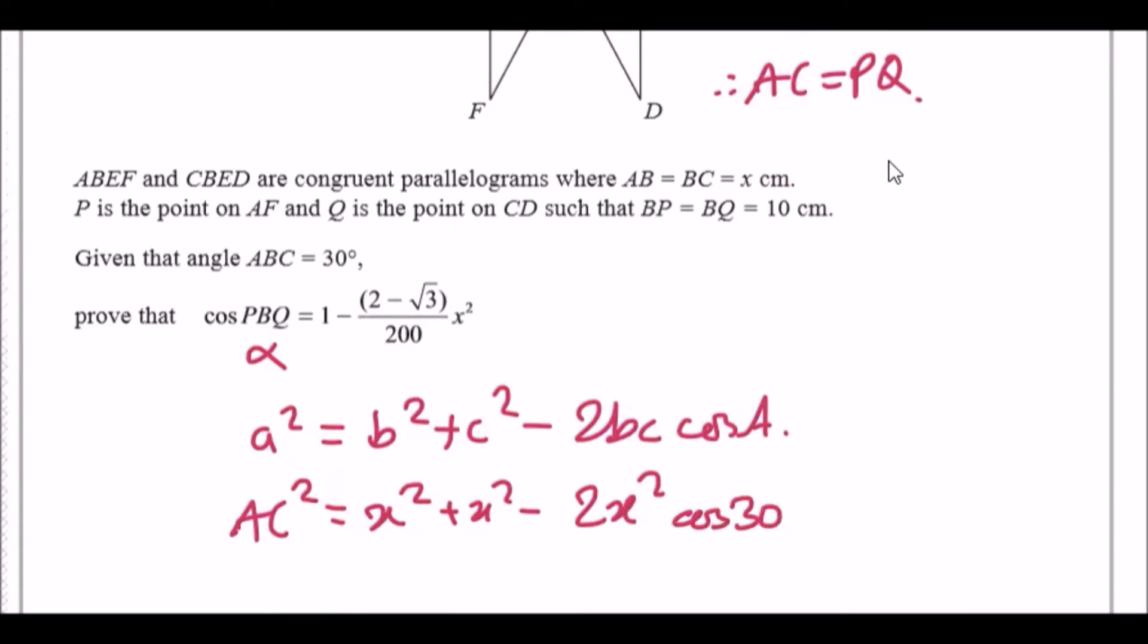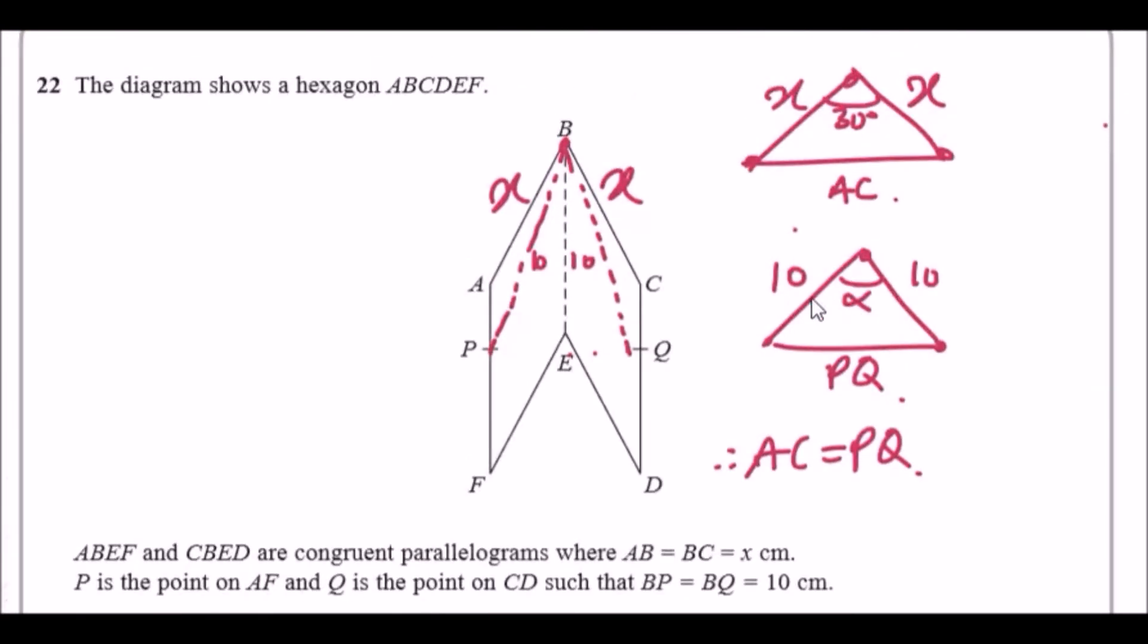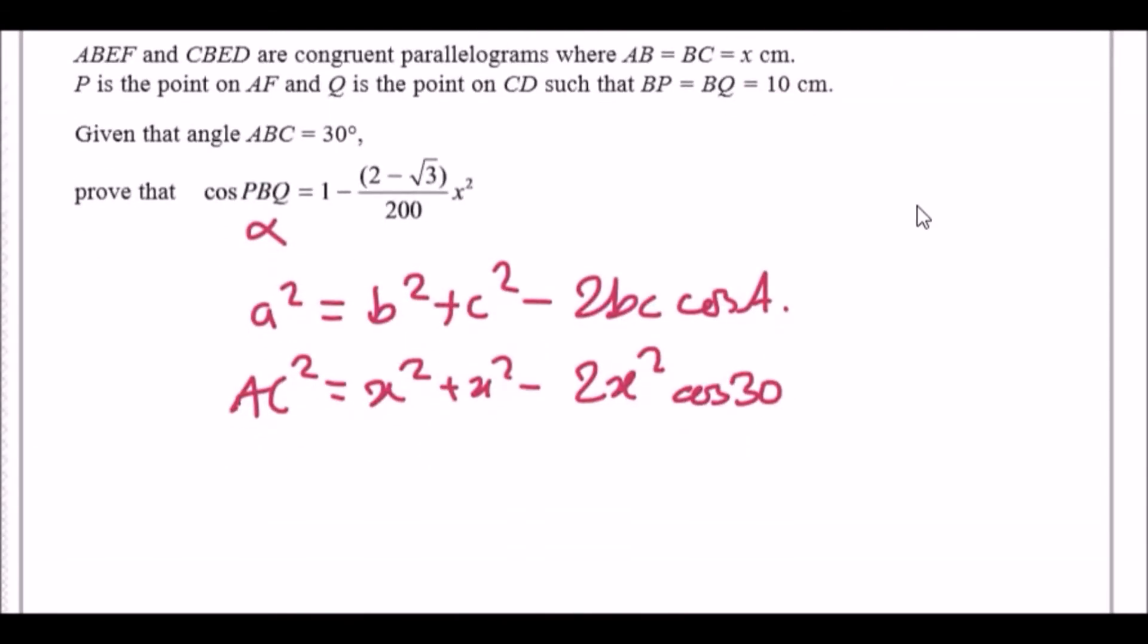And the second equation for the second triangle will be the same thing with PQ being a little a and alpha being the big A, and tens being the b's and c's. So this will also give us PQ² equals 10² plus 10² minus 2 times 10 times 10, which is 200 cos alpha.